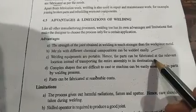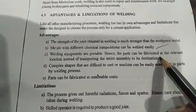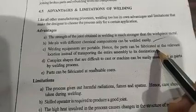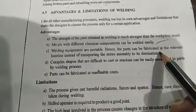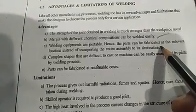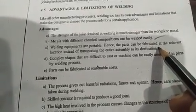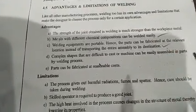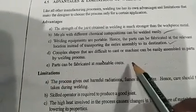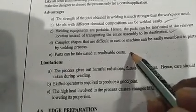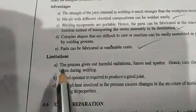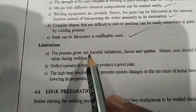Even in high-rise building construction of seven, eight, or nine floors, welding fabrication work can be done by taking a small welding machine — that is, a transformer. The parts can be fabricated at a reasonable cost, and the cost of welding is very low.